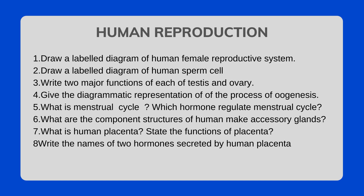What is the menstrual cycle and which hormones regulate it? What are the component structures of human male accessory glands? What is the human placenta? State the functions of the placenta. Write the names of two hormones secreted by the human placenta.